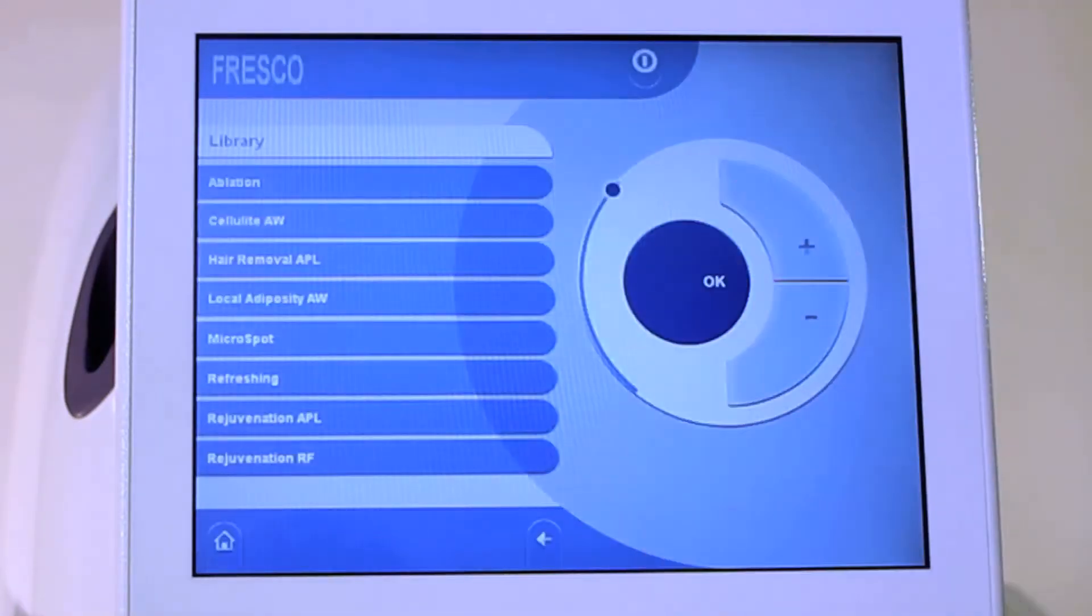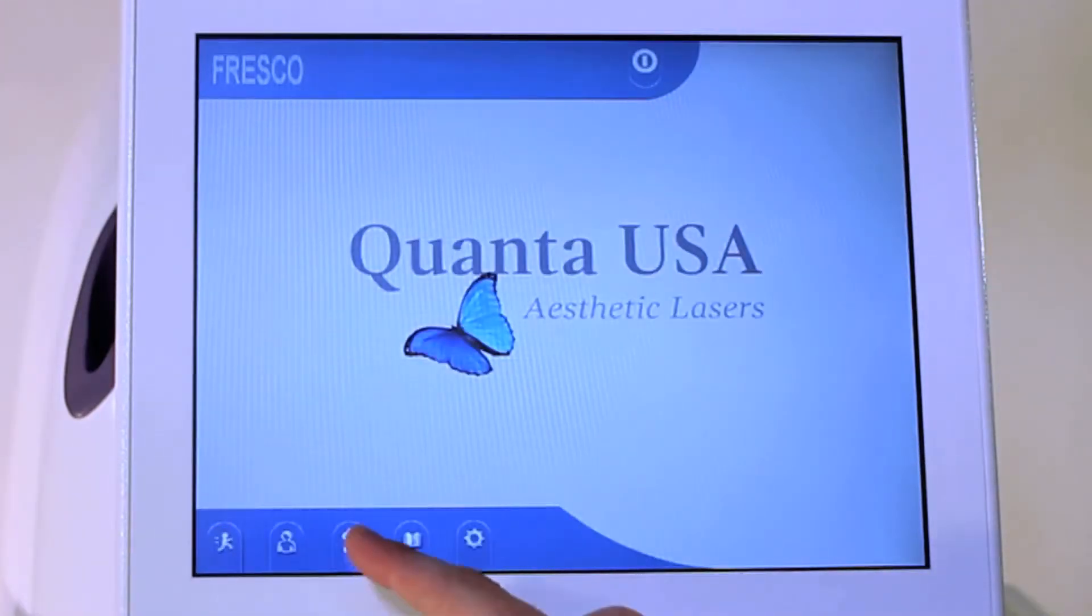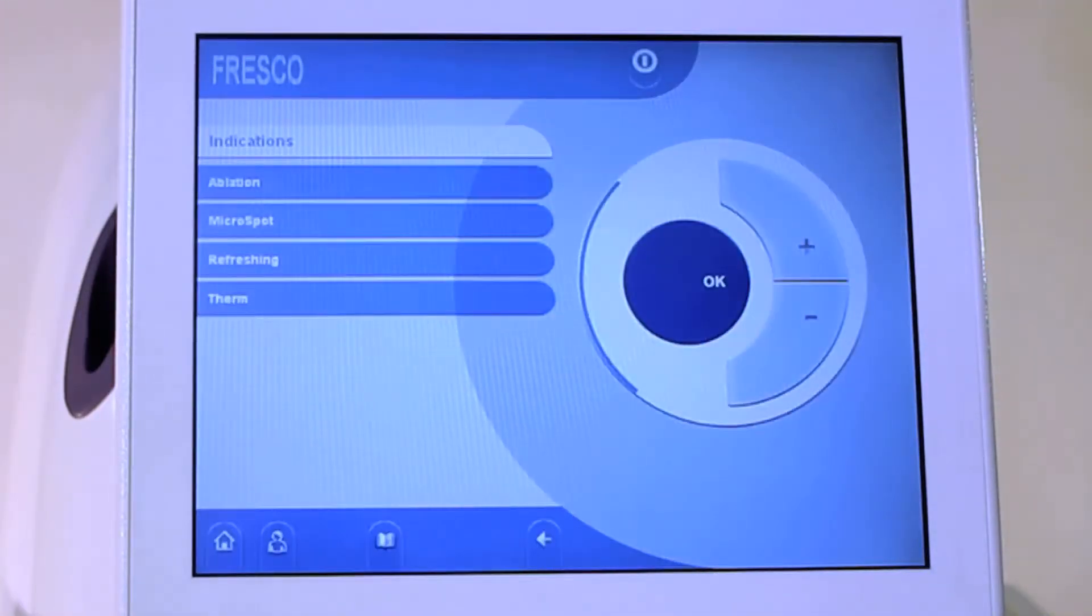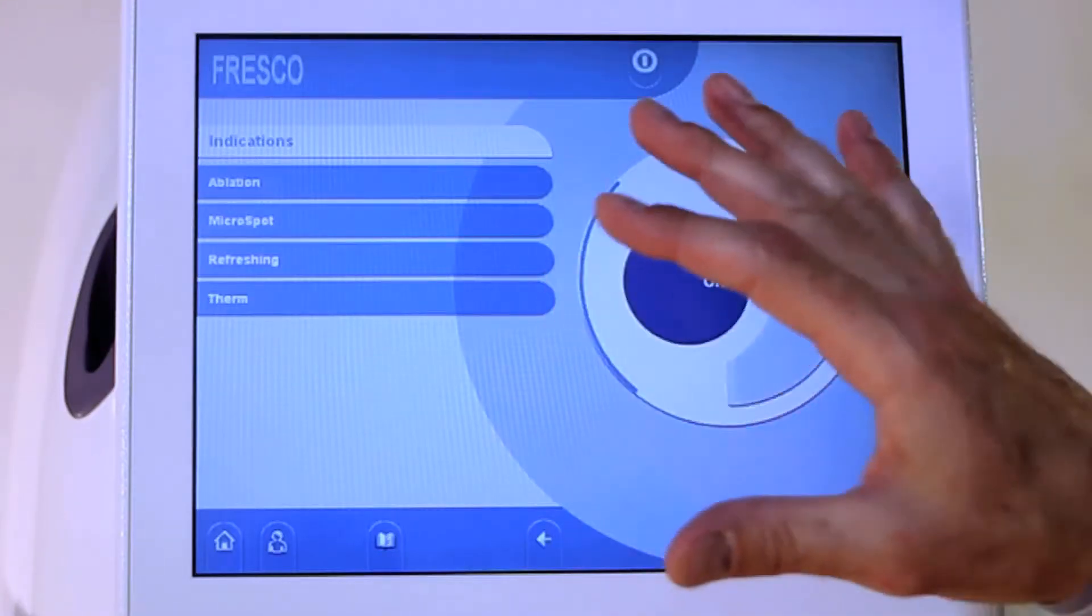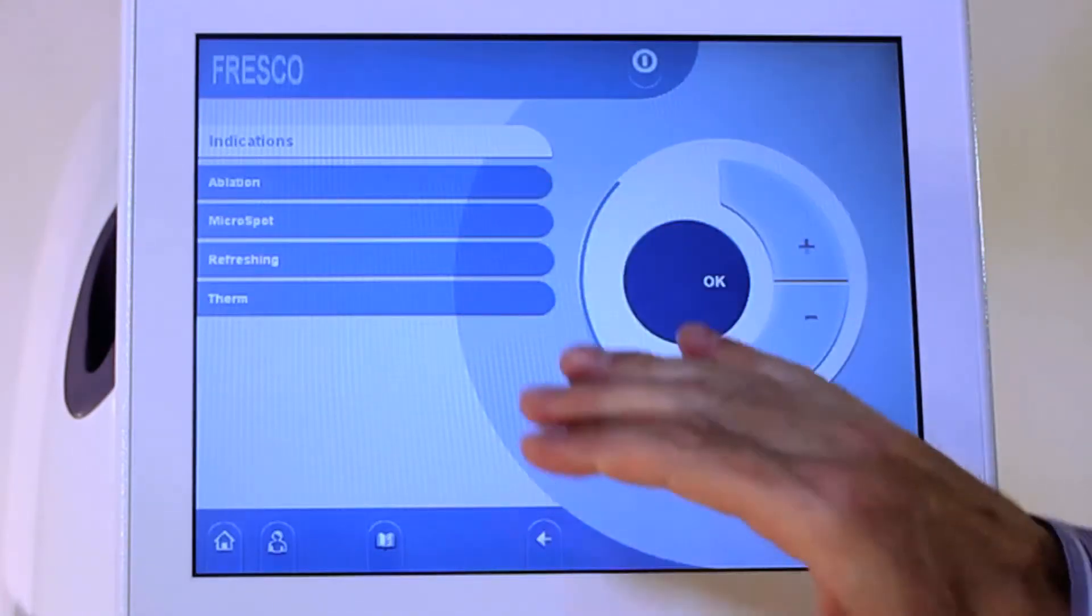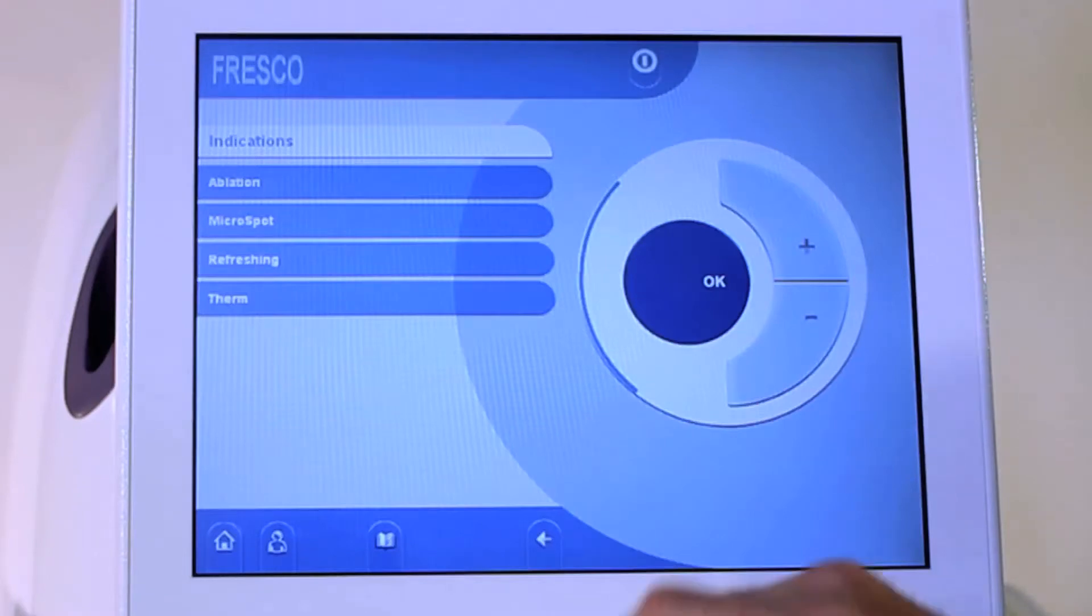Library, again, goes through all the different options that you have with this device. And again, here's the indication screen. If we have the different handpiece, the varial handpiece on, then we can choose some of these other options as well. Right now, we have the fractional micro spot on.